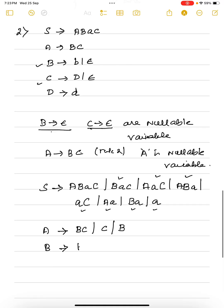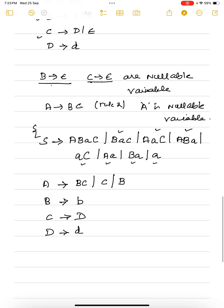Now we can eliminate the epsilon productions for B and C. D is not having any epsilon values. So this is the corresponding grammar after eliminating null production. This is our answer.